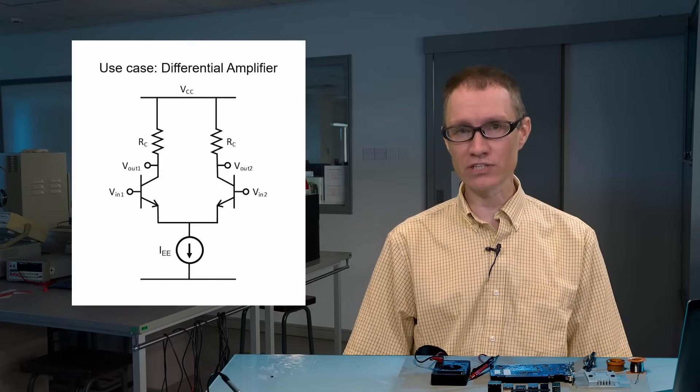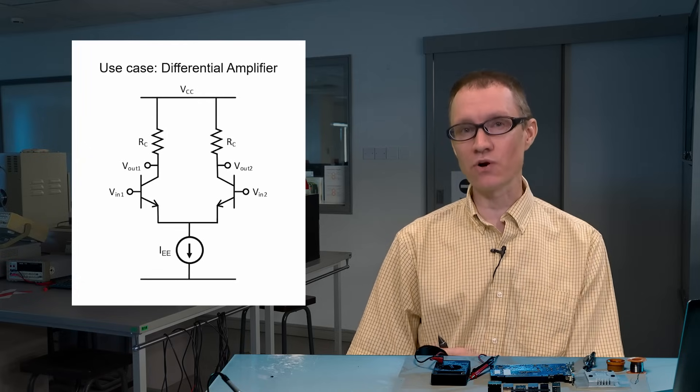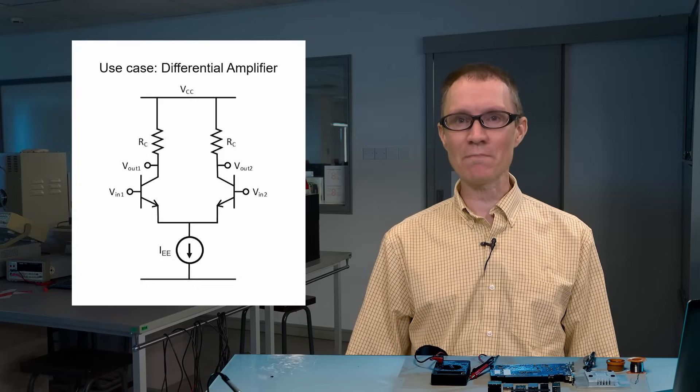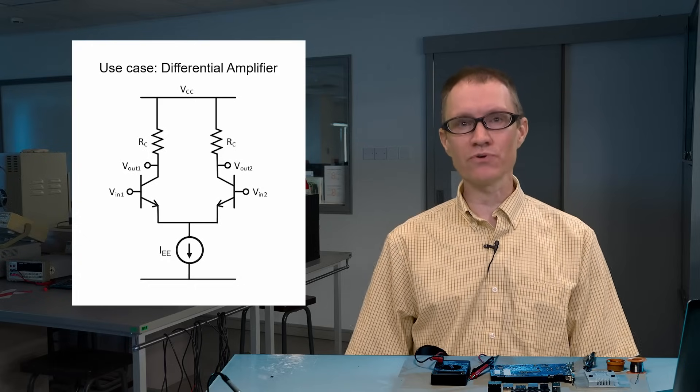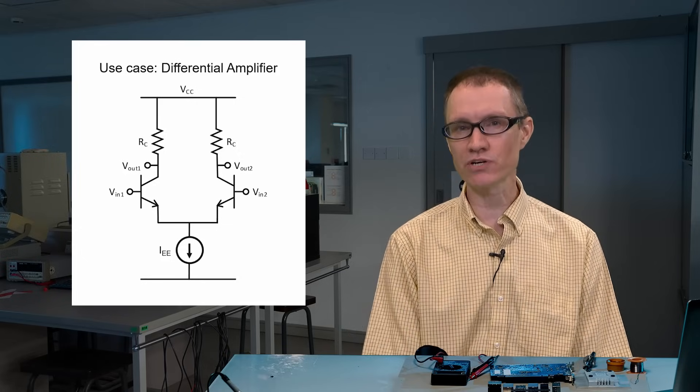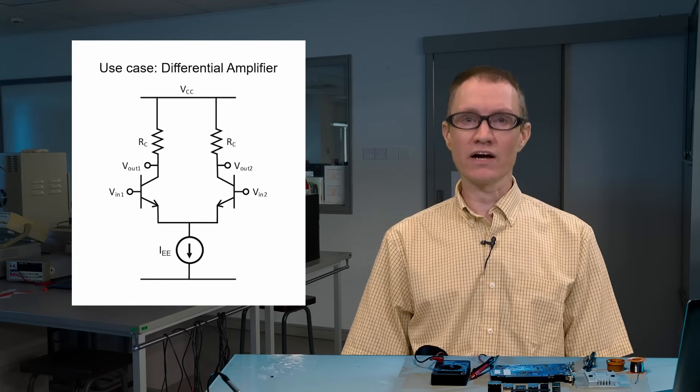Now, why might you even want to use current sources? Well, if you watched my last video on differential amplifiers, you will remember that if we replace a resistor with a current source in the differential amplifier, then we make the amplifier better. Things are improved. The common mode gain, for example, is much improved if we use a current source rather than a resistor.